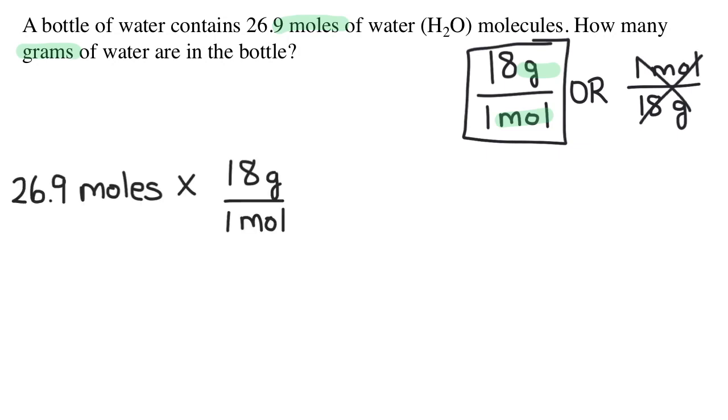So the math becomes 26.9 moles times 18 over 1 or just 26.9 times 18. We put this into our calculator and we get 484 grams of water.